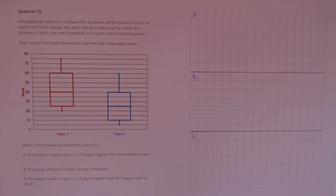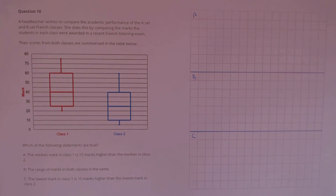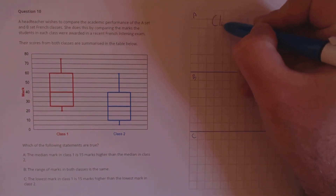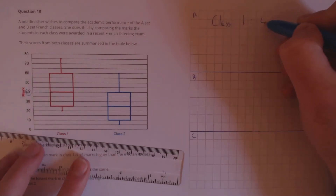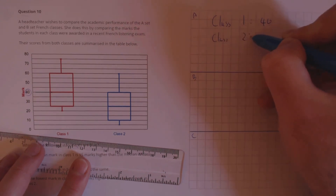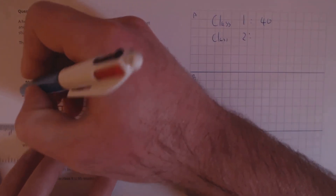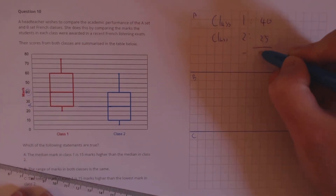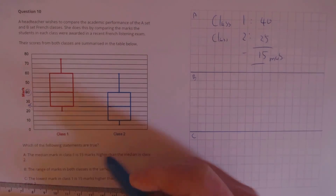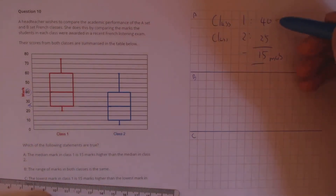Question 10. A head teacher wishes to compare the academic performance of the A set and B set French classes by comparing marks in a recent French listening exam. Their scores are summarised in the box plot below. Which of the following statements are true? A: the median mark in class 1 is 15 marks higher than the median in class 2. Reading off the median for class 1 gives 40, and for class 2 it's 25. The difference is 15 marks, and the median in class 1 is indeed 15 marks higher — true.